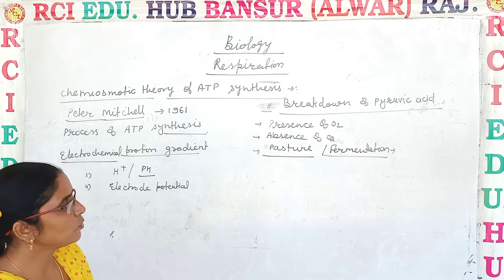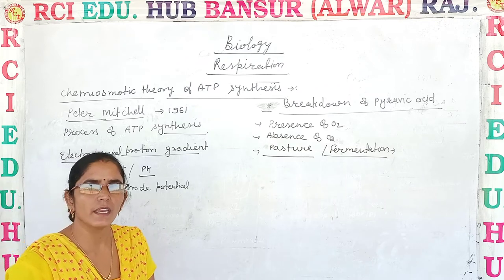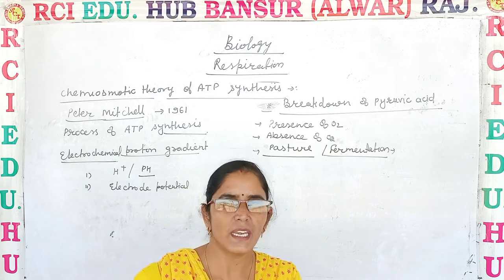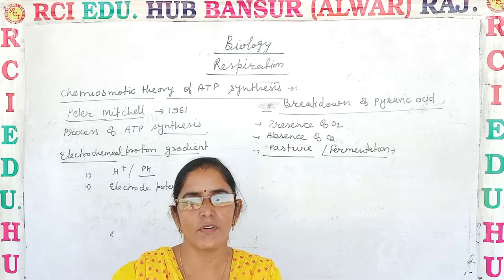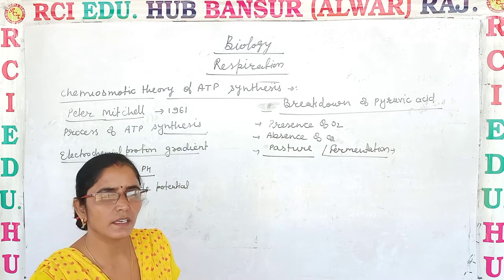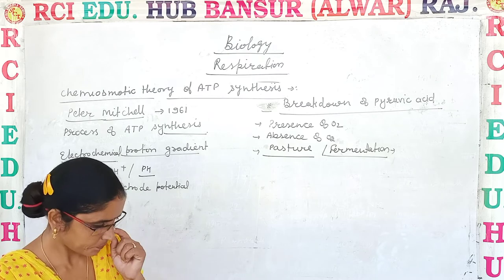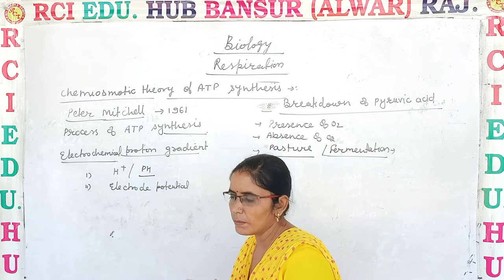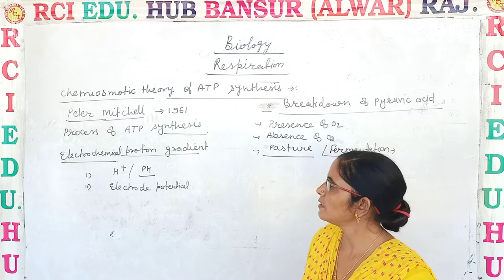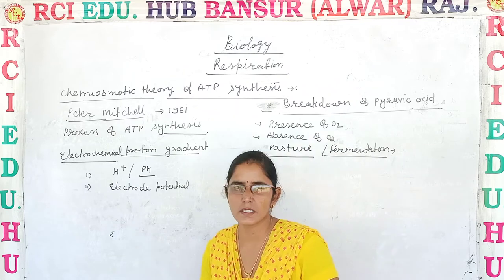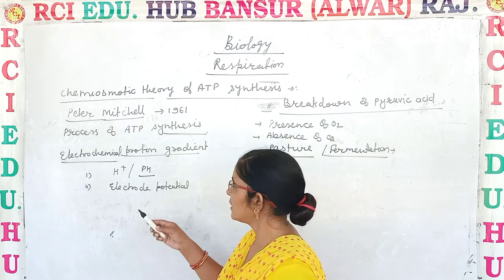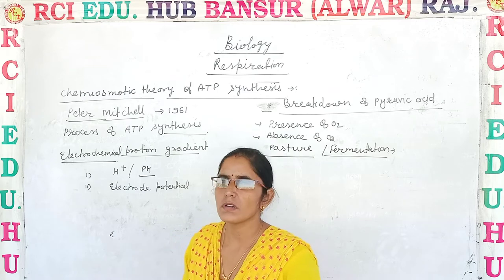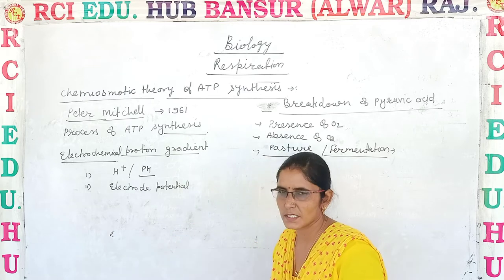We know very well that ATP is the energy currency of the cell, and if the cell requires proper functioning, it needs ATP. This theory was given by Peter Mitchell in 1961. Peter Mitchell gave the theory of chemiosmotic ATP synthesis.